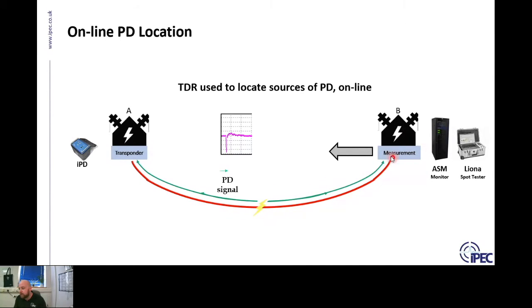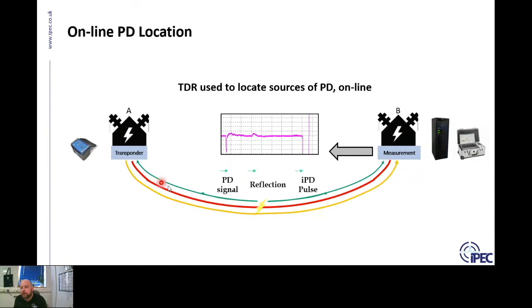So the first thing the measurement device will see is the initial PD that has occurred. Now at the same time, in this case because the PD is perfectly in the middle of the cable - which never happens - at the same time the transponder unit has detected the PD. Now that transponder unit will trigger on the PD and it will send a large pulse down the cable.